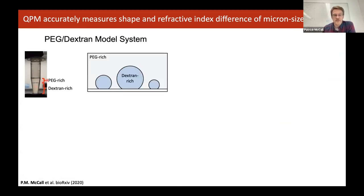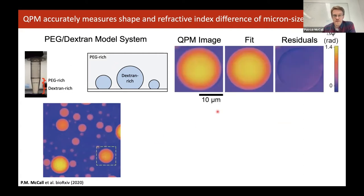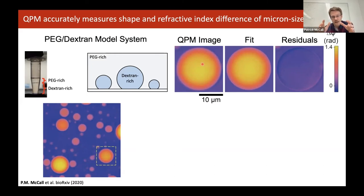On a quantitative phase microscope, the phase images look like this. Selecting one of these droplets, we have the quantitative phase image — very bright on the inside of the droplet because the droplet is taller there, then decays to the outside. If we fit this image to a model with four geometric parameters — three for the centroid in x, y, and z, and a fourth for the radius — we get an excellent model for the geometry.